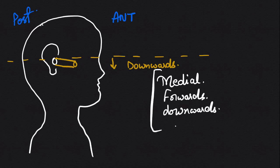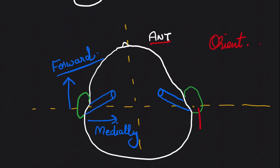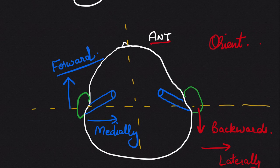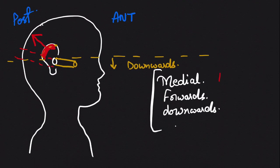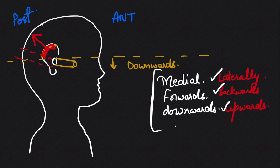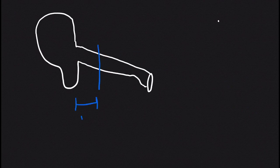To see from one end of the tube to the tympanic membrane, we need to come in line with this tube. We do that by pulling the pinna in the three opposite directions — backwards, laterally, and upwards — to counteract the medial, forward, and downward orientation of the canal.